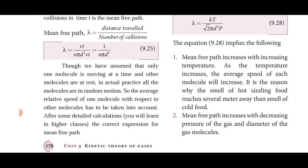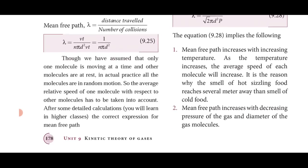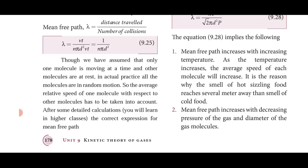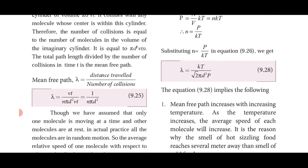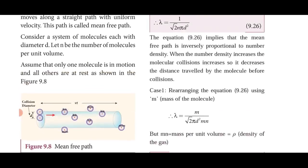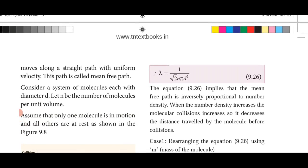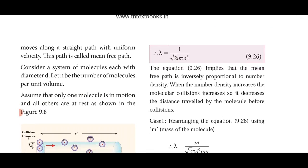We assumed only one molecule moves while others are at rest, but in practice all molecules are in random motion. Accounting for the average relative speed of one molecule with respect to another, the corrected expression becomes λ = 1/(√2 · n · π · d²). So mean free path is inversely proportional to the number density n.